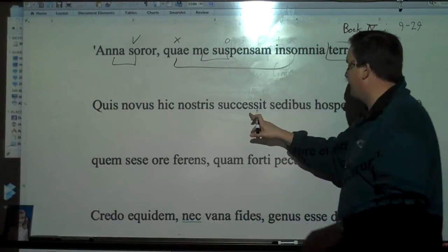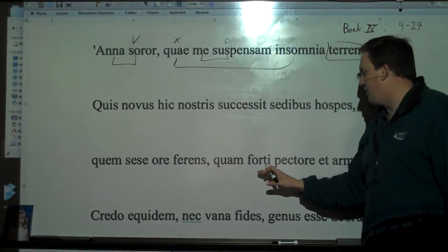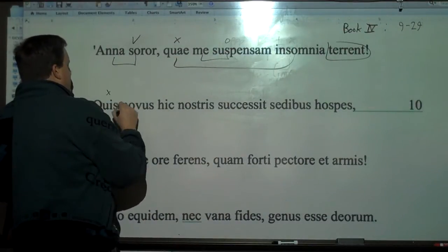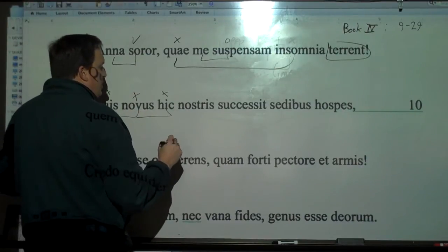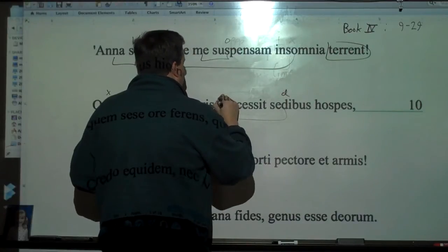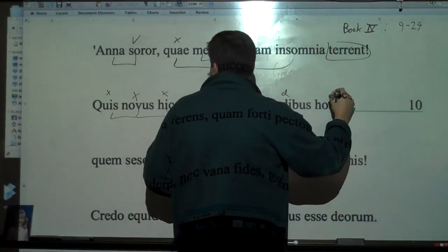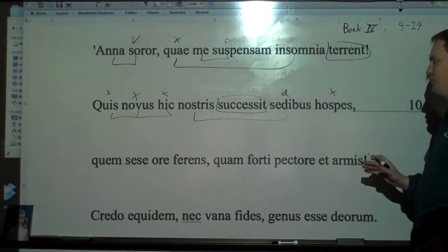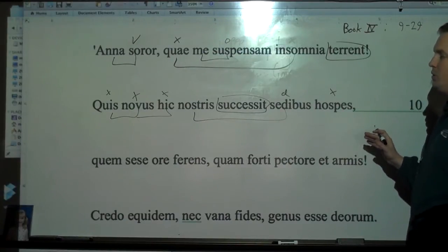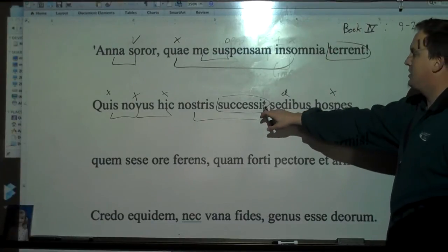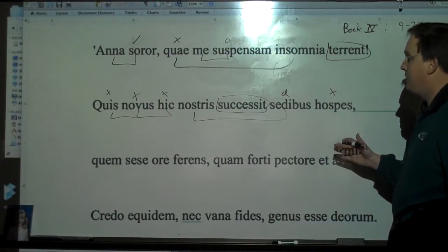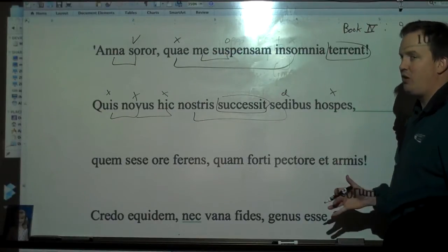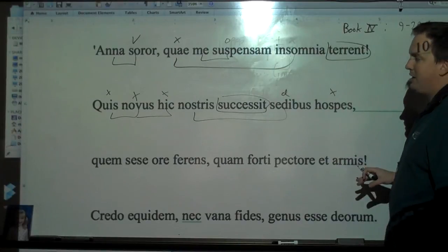Quis novus hic nostris successit sedibus hospes, quam se ipse ore ferens, quam forti pectore et armis. Quis novus, now we start off with all these nice nominatives. Quis, novus, they're all going together. Hic, nostris sedibus, that is a dative going with successit. And then hospes is another nominative. So we need to say, quis, what new guest has come to, has approached our regents? And sometimes editors want to put like a relative clause in here. You can do that as well to make it a little bit better.